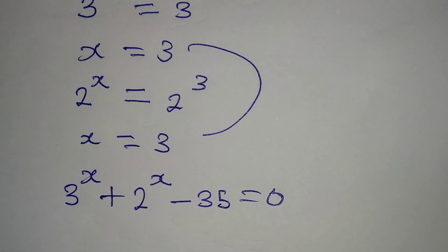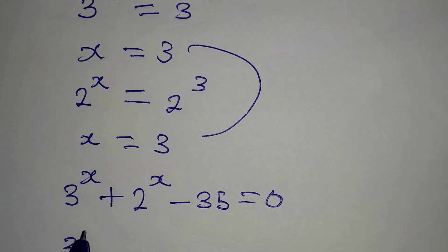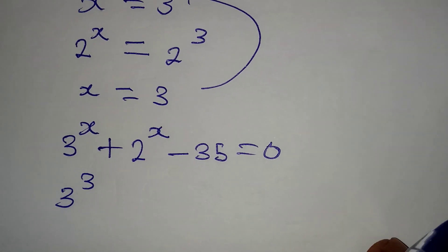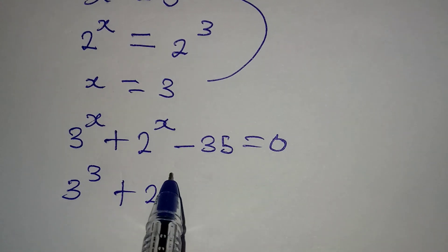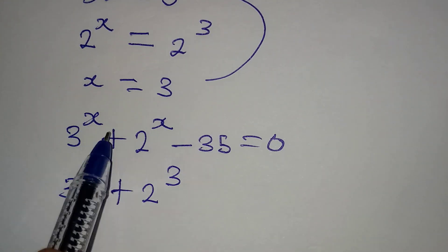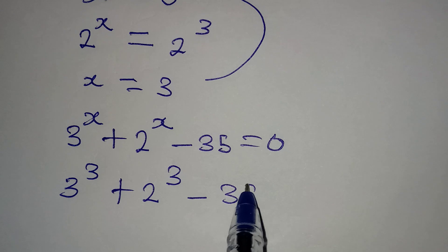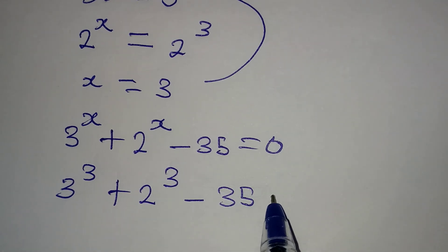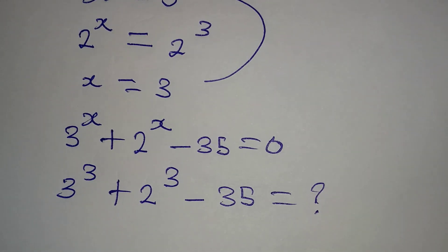...because x = 3, minus 35. Now the question is, will this give us 0? What will this give us?